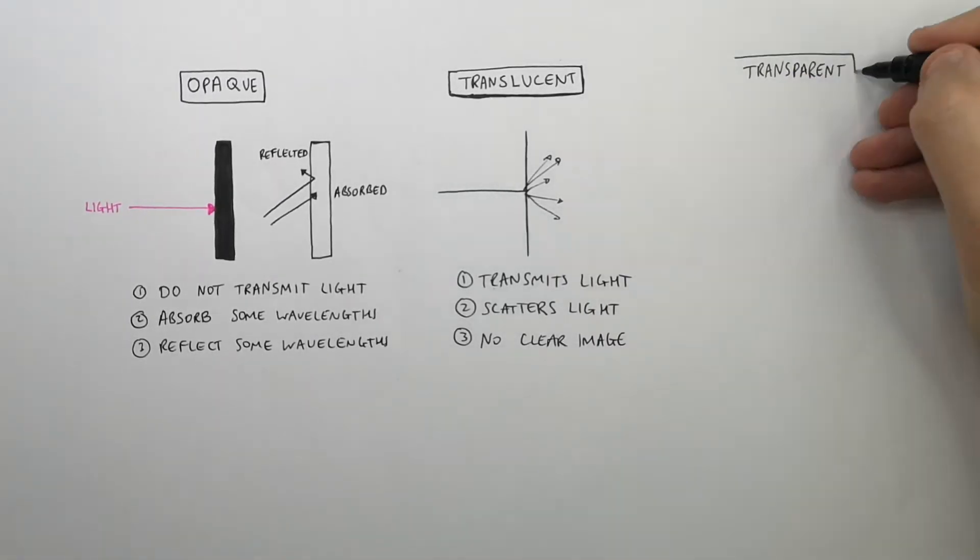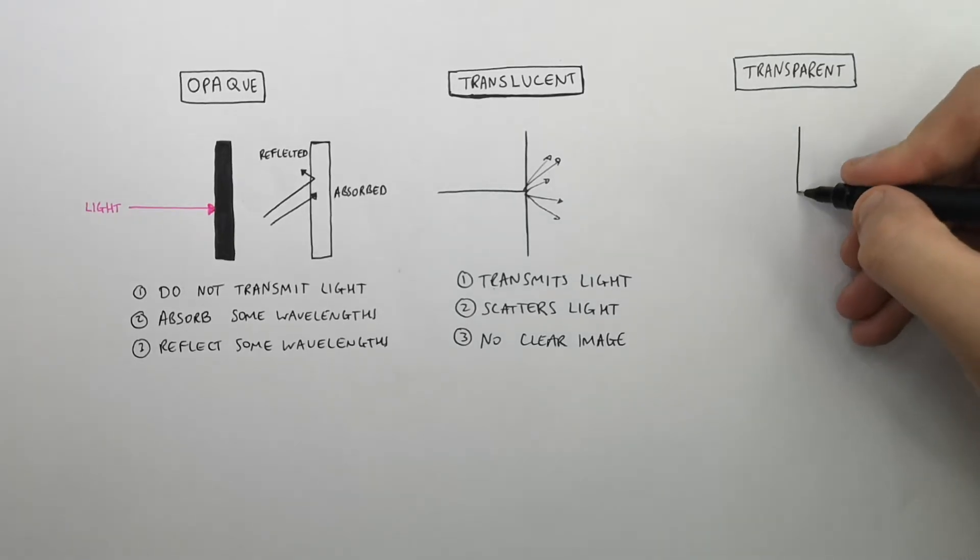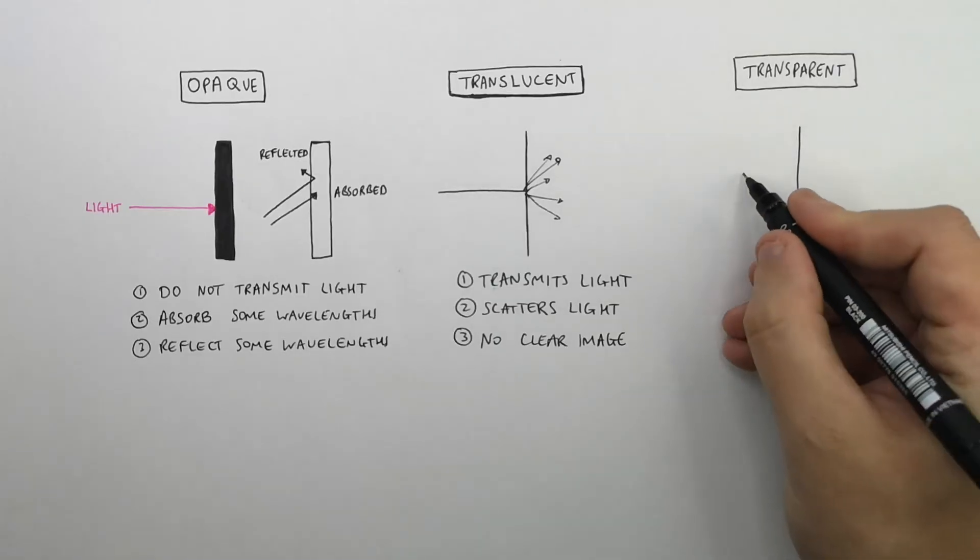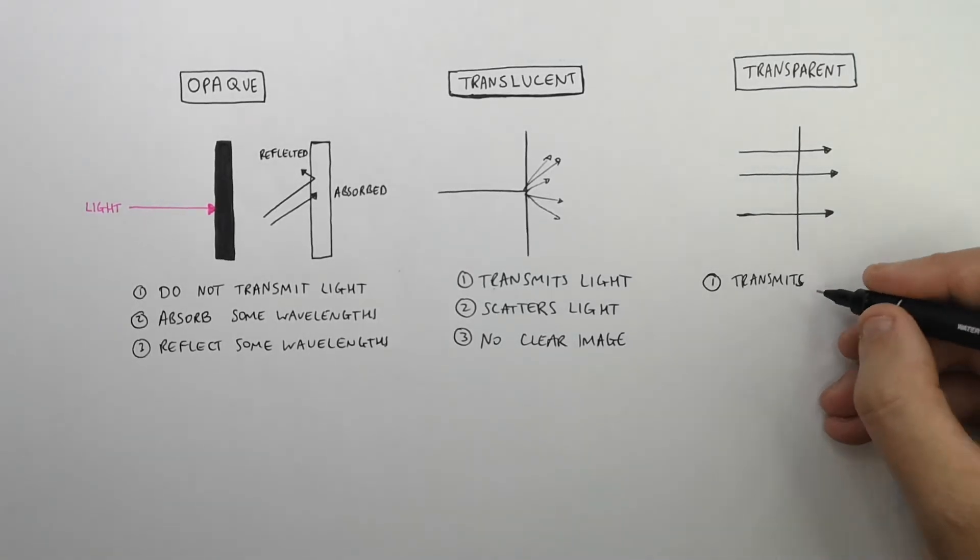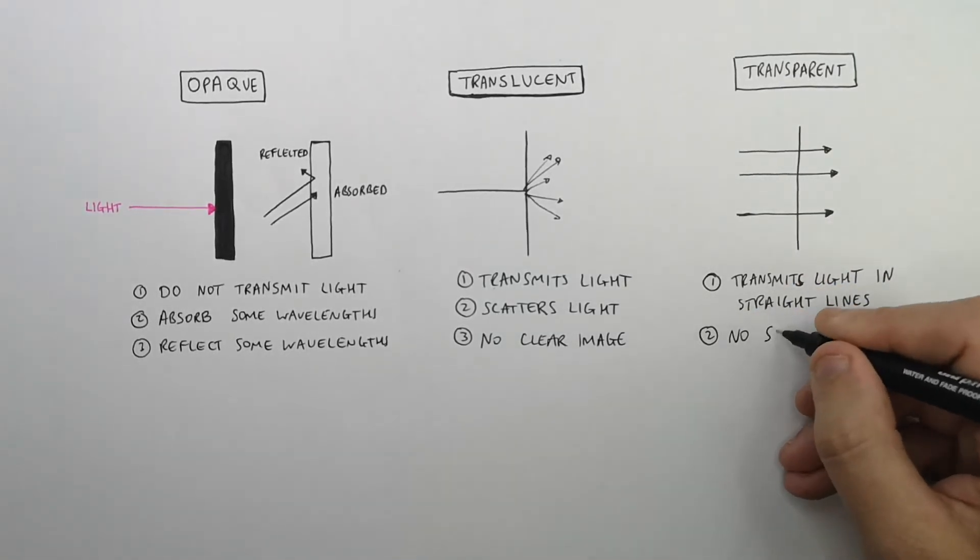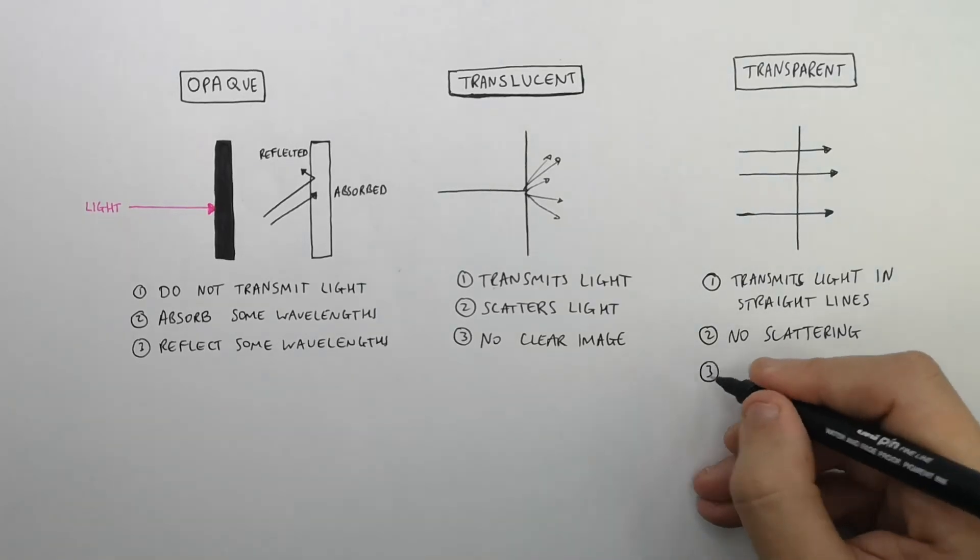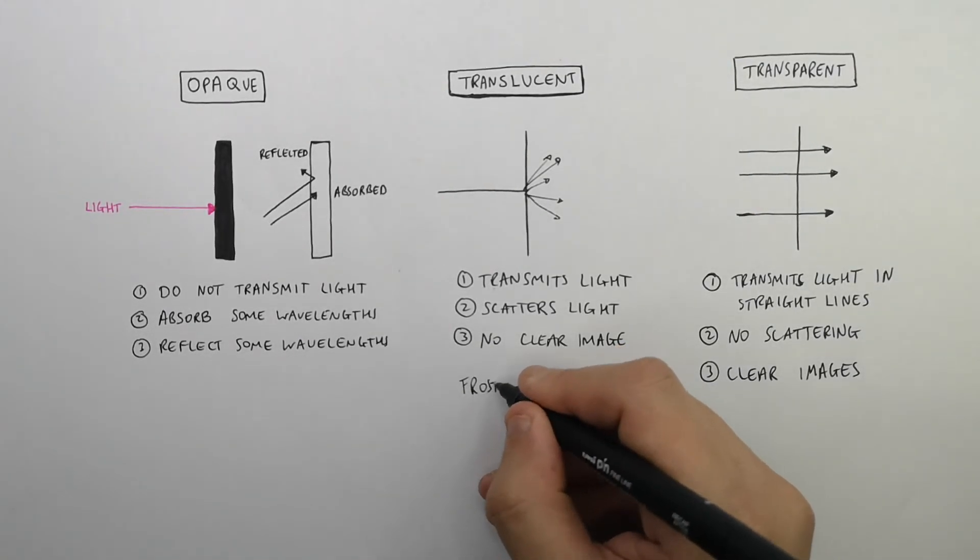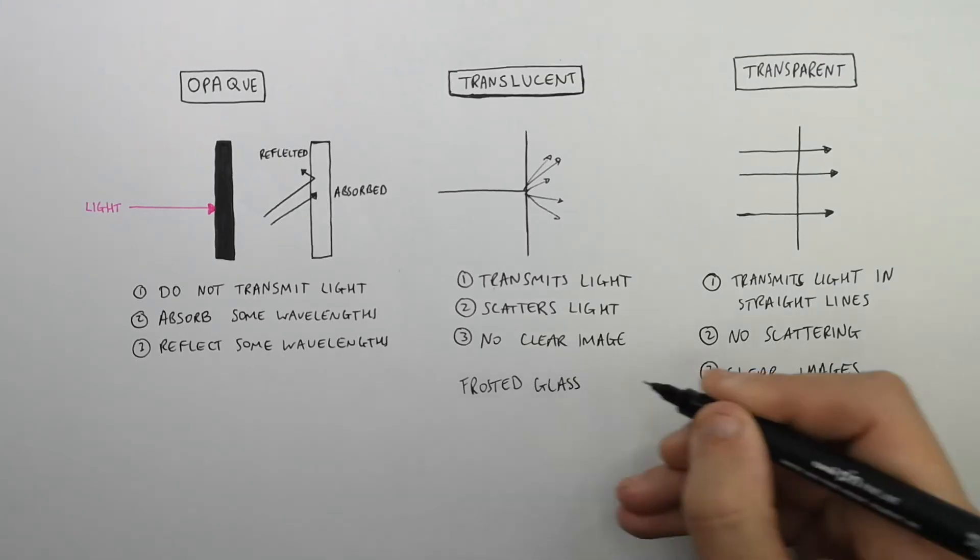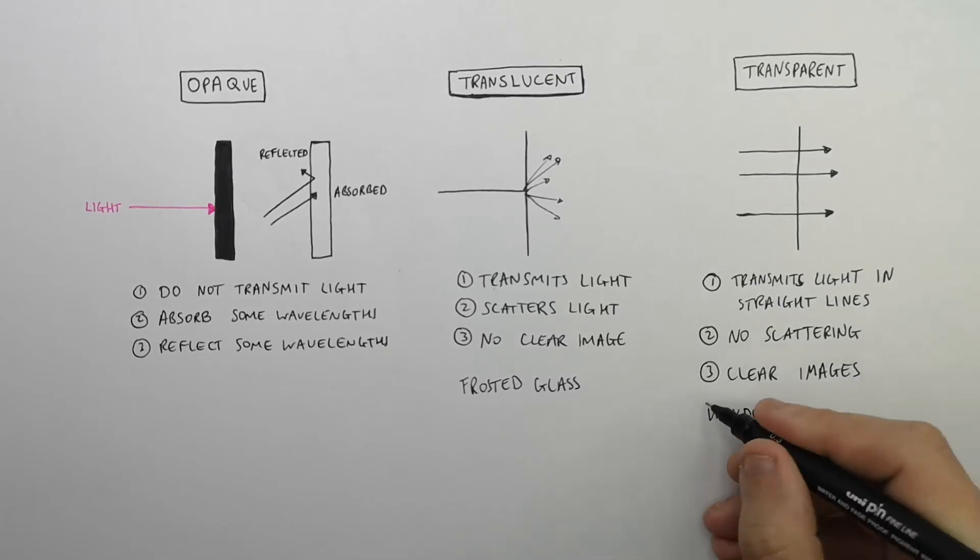Whereas transparent objects, such as windows and glass, they transmit light in straight lines. This means there is no scattering and that the image is clear. Examples of translucent objects are frosted windows and transparent objects is glass.